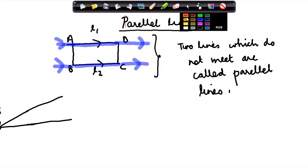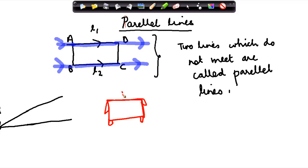Let me give you some more examples. You would have seen that your table would have four legs. So in a table, if you see this particular line and this particular line, these are also two lines that also never meet.